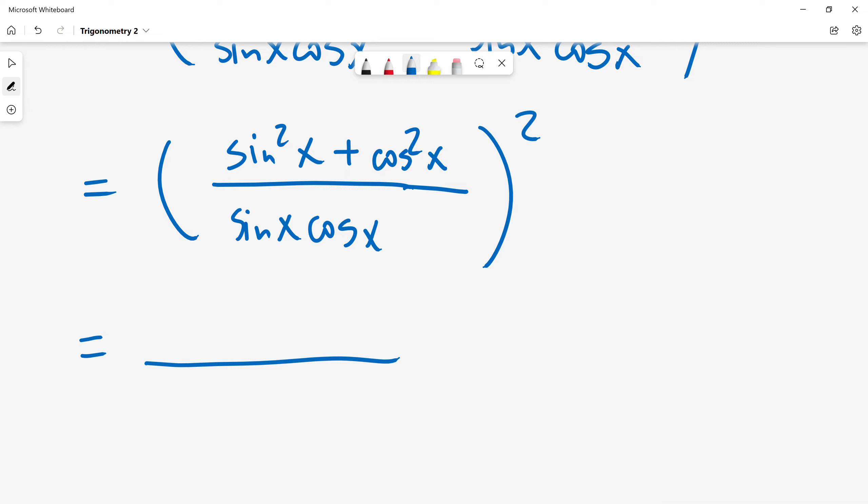Then using trigonometric identity, sin squared x plus cos squared x, this is always equals one.